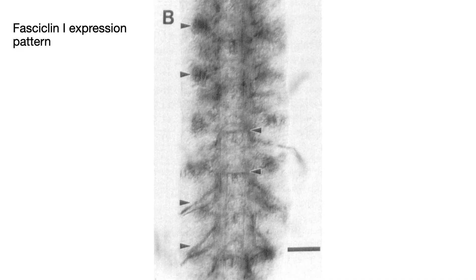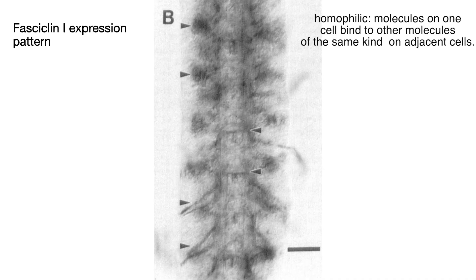One of the molecules identified is called fasciclin-1, and that's the focus of this paper by Thomas Elkins. FAS1 is a glycoprotein expressed in all peripheral axons, a subset of the axons in the commissures and longitudinal fascicles, and some non-neuronal cells. It has been genetically mapped — it's in Division 89D of the third chromosome of Drosophila — and it's been isolated, cloned, and sequenced. If you're vertebrate-centric, it has several homologues in humans: periostin and stabilins, for instance. Basically, it's a small homophilic molecule on the surface of cells that makes cells expressing FAS1 stick to and follow other cells expressing FAS1.